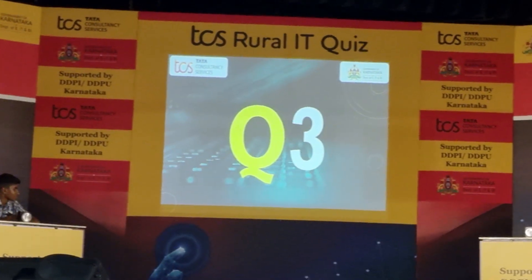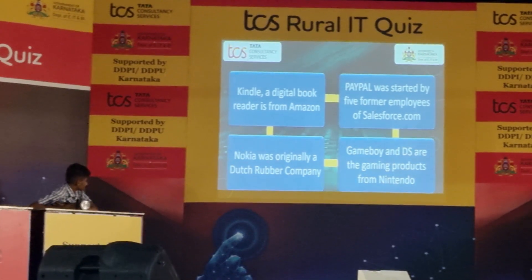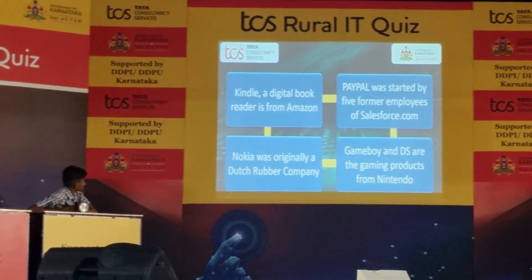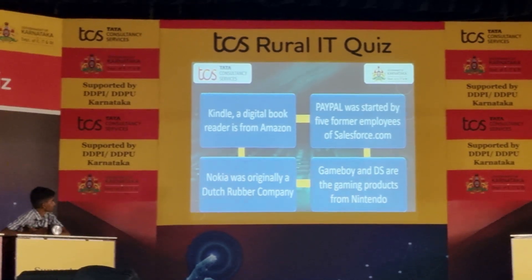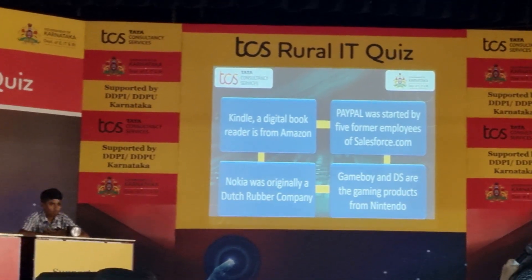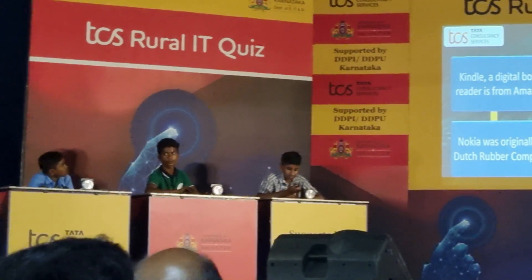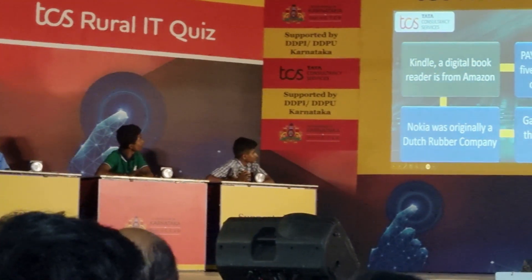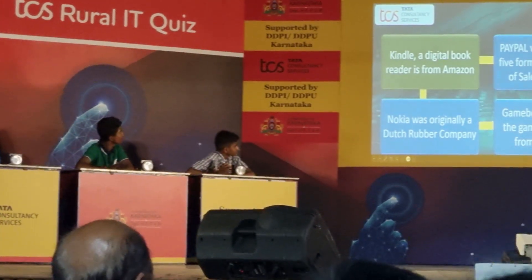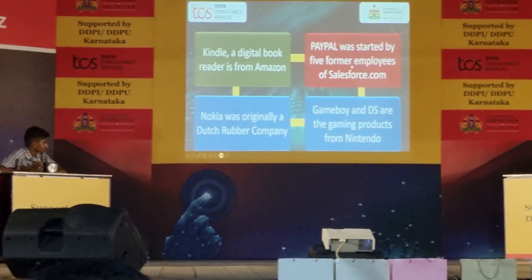Let's move on to the next one. Nitin, your direct question on your screen now. Kindle is Amazon's product — digital book. PayPal was started by five former employees of Salesforce. Nokia was originally a Dutch rubber company. Game Boy and DS are gaming products from Nintendo. Kindle and PayPal — Kindle is absolutely right, 50 points. That is the wrong one, but you still get 50 points.